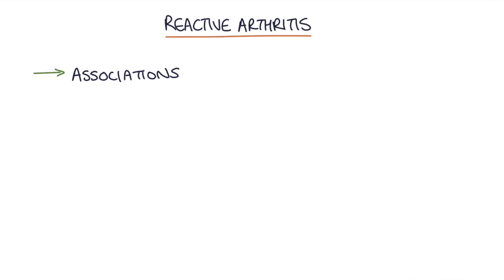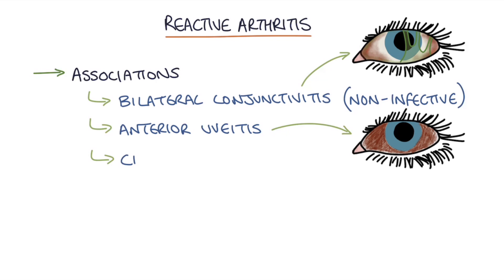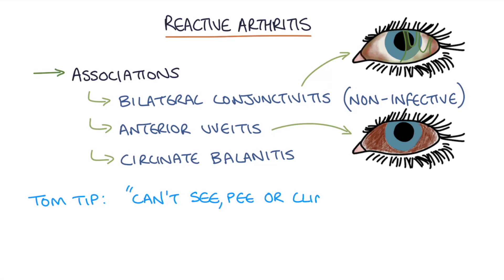There are a few associations to be aware of: bilateral conjunctivitis (a non-infective conjunctivitis), anterior uveitis, and circinate balanitis, which is dermatitis of the head of the penis. A helpful mnemonic: these features of reactive arthritis — eye problems, balanitis, and arthritis — lead to the typical saying 'can't see, pee, or climb a tree,' a catchy way to remember the features of reactive arthritis.